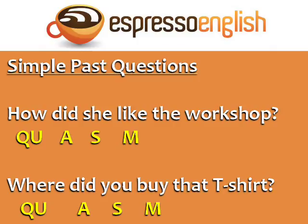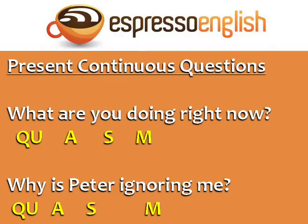Questions in the simple past also follow this pattern: 'How did she like the workshop?' and 'Where did you buy that t-shirt?' For simple past questions, the auxiliary verb is 'did'. Here are two questions in the present continuous: 'What are you doing right now?' and 'Why is Peter ignoring me?' It's the same formula, but the auxiliary verb is a form of 'to be' — 'are' or 'is' — instead of 'do' or 'does'.